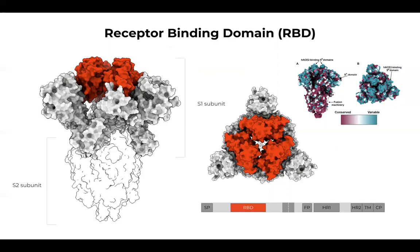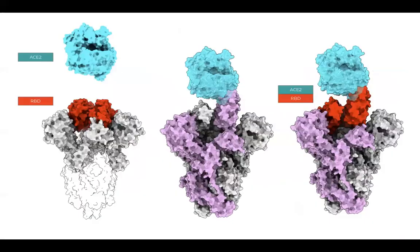Why is the top more variable? Different cell types and different hosts will have a different receptor structure. So to connect to different ones and adapt to how different hosts function, the virus must more mutate this top part than the bottom part. The bottom part has the same function everywhere.